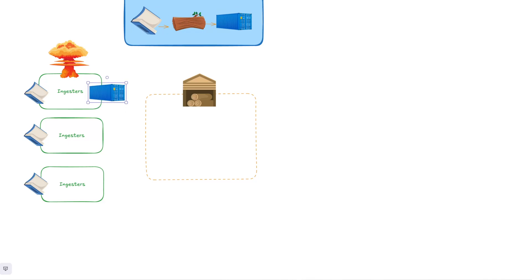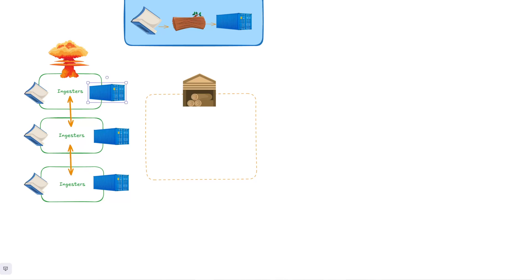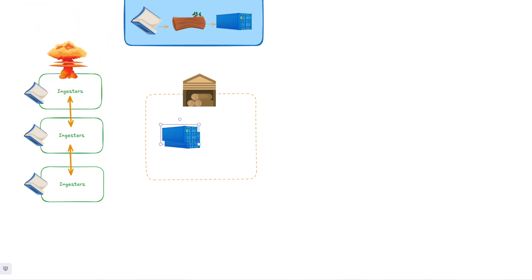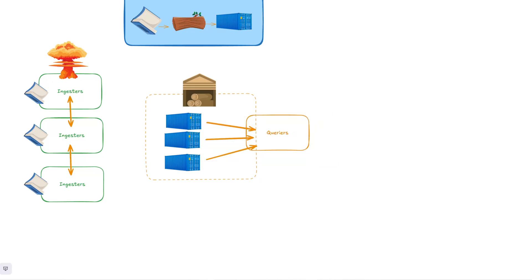When using replication, it is worth noting that Loki has deduplication mechanisms that allow ingesters to sync. This synchronization allows them to process and cut chunks simultaneously. When all three replicas have identical data, the chunks will be exactly the same, ensuring that only one copy of the chunk is written to the object store. However, in the case that one of the ingesters is failing, clones of the same log chunks can be written to the object store. These clones are deduplicated at query time.